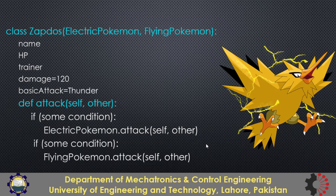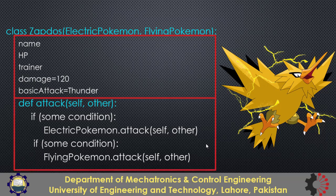Now see this Zapdos Pokemon — this is both an electric and a flying Pokemon. So we can use multiple inheritance here and will be able to inherit methods from both parents. The attack method is overridden in a way that under certain conditions it can apply the attack method of electric Pokemon, and in other cases it can apply the attack method of flying Pokemon.